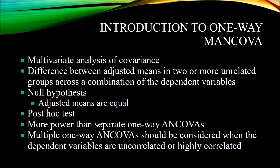If we compare it to ANOVA, MANCOVA has a multivariate component — it has multiple dependent variables, unlike ANOVA which only has one dependent variable — and we have at least one covariate. A one-way MANCOVA has one independent variable (that's the one-way part), more than one dependent variable (that's the multivariate part), and at least one covariate.